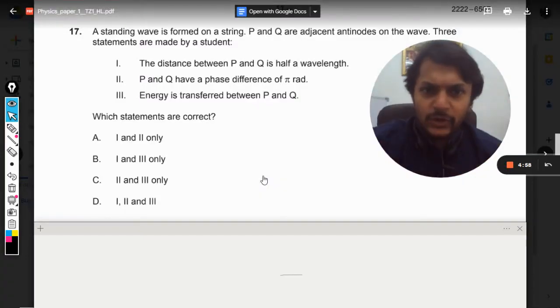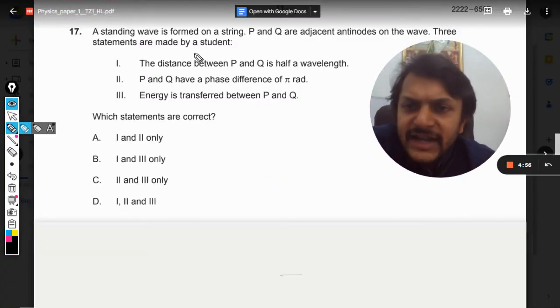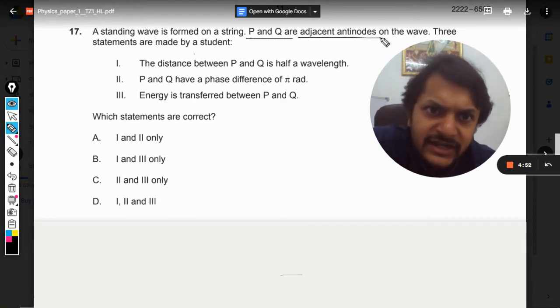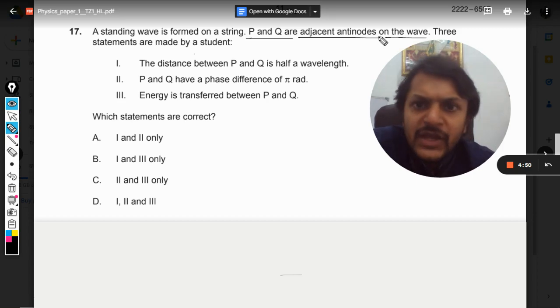Okay dear students, let us see what is there in this question. A standing wave is formed on a string. P and Q are adjacent antinodes on the wave. Three statements are made by a student: number one, the distance between P and Q is half a wavelength; P and Q have a phase difference of π radian; and energy is transferred between P and Q.